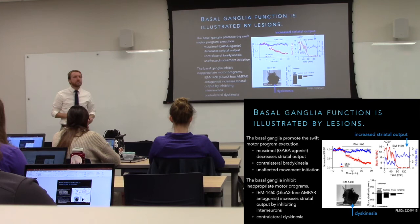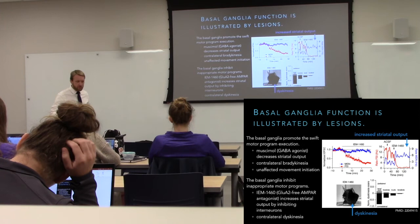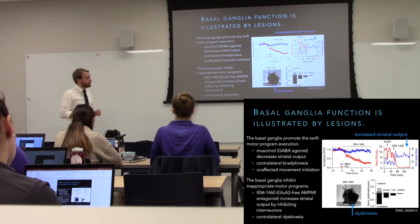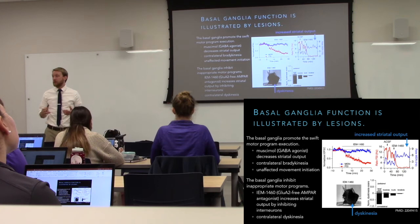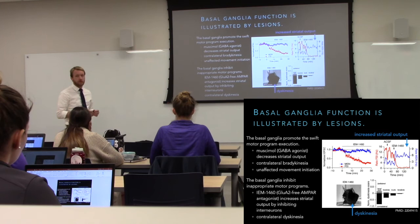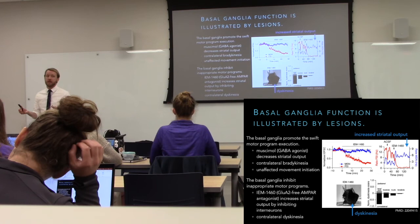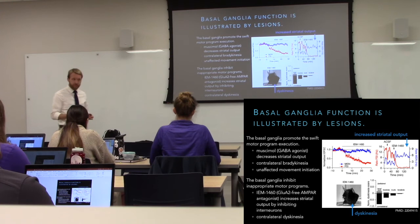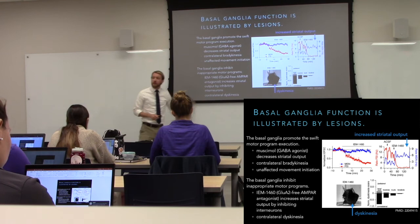We think the basal ganglia might also be important for swiftly executing actions — rapid decision-making is what occurs here. The reason we think this is because infusion of a GABA agonist into the striatum is going to inhibit striatal output. When we inhibit basal ganglia signaling, what we see is bradykinesia — slow movement. So when you inhibit communication within the basal ganglia, when you prevent the striatum from doing its job, what you see is slow movement. That tells us that part of its job is rapid execution of actions.